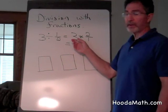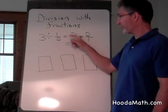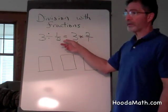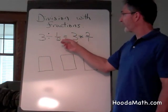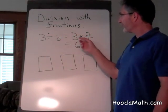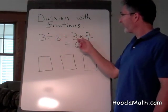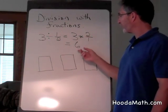we keep the first number the same and multiply by the reciprocal, or we reverse the order of the numerator and the denominator. So 3 divided by 1 half equals 3 times 2 over 1, or 6.